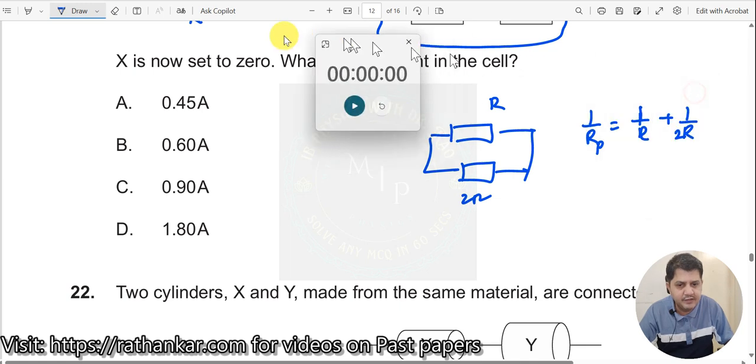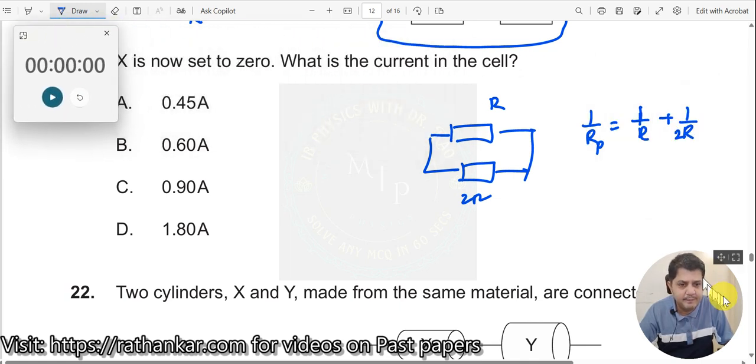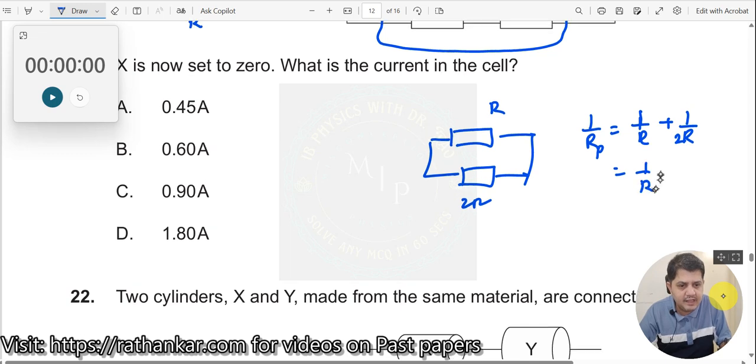When I do this, this should now be equal to 1 by R common outside into 1 plus 1 by 2. It should now be equal to 1 plus 1 by 2 is 3 by 2, it should be 3 by 2R. In other words, Rp is equal to 2R divided by 3.